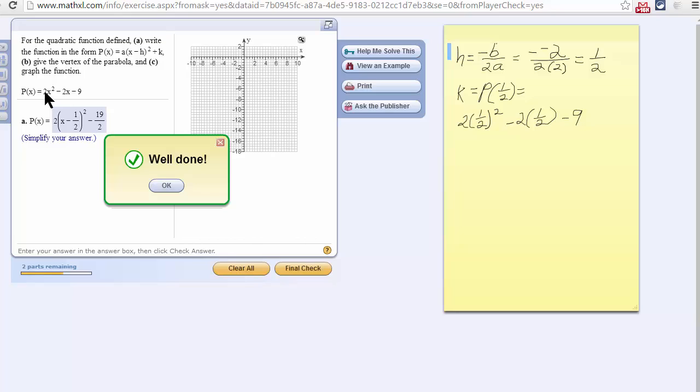Your a number is 2, your b number is negative 2, and your c number is negative 9. To find the vertex, which is what we need, h and k for this form of the equation, we already have a, which is 2.